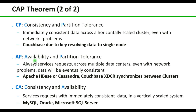Availability and Partition Tolerance means the system always services requests across multiple data centers even with network problems — data will be eventually consistent. Cassandra is an eventually consistent system. When using Couchbase with XDCR (cross-datacenter replication synchronization between clusters), there is a minute consistency delay that can be tuned depending on parameter settings. The next combination is CA — Consistency and Availability — which services requests with immediately consistent data in a vertically scaled system.